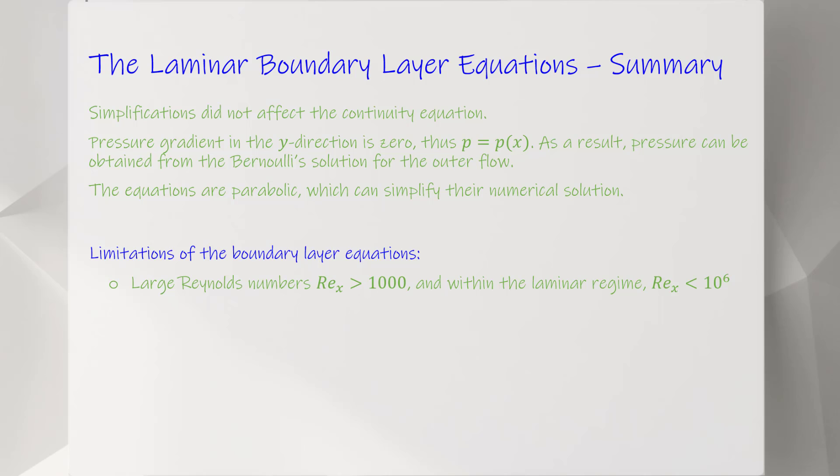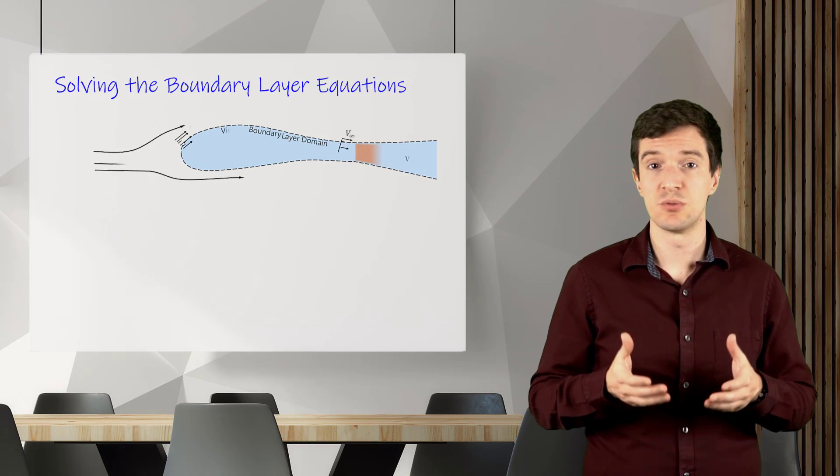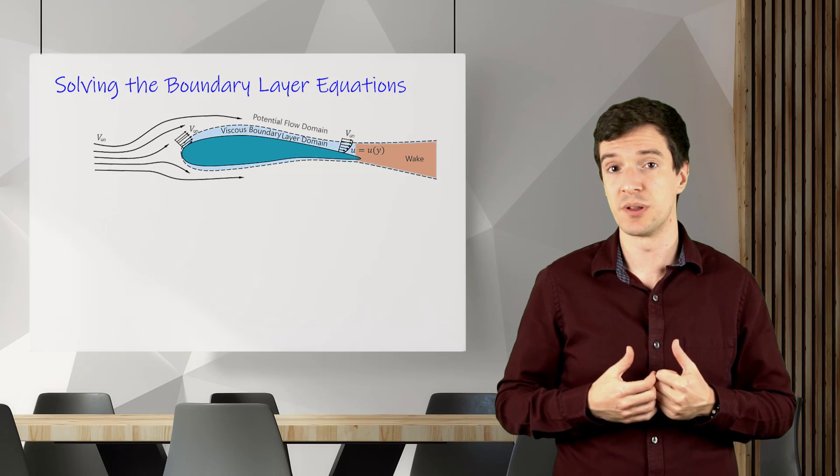Also, the boundary layer theory is valid only for attached flows and cannot describe separation or even the flow past the separation point. We obtain the boundary layer equations and we can solve them to analyze viscous flow problems.